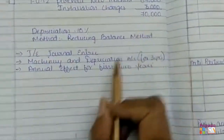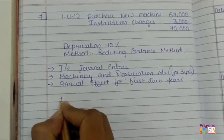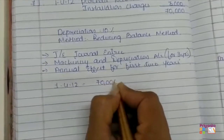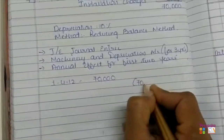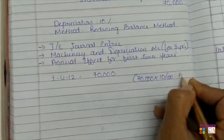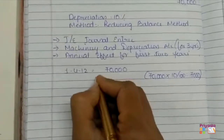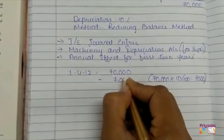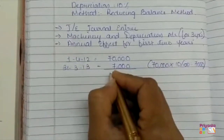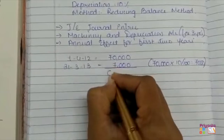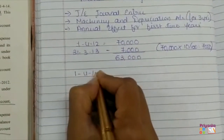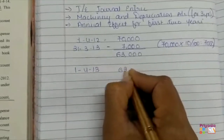On Rs. 70,000, if we calculate depreciation for Year 1, the machine cost price is Rs. 70,000. Under the reducing balance method, we get Rs. 7,000 depreciation. The year-end value is Rs. 70,000 minus Rs. 7,000, which equals Rs. 63,000. This Rs. 63,000 will be the opening balance for the next year as at 31st March 2013.